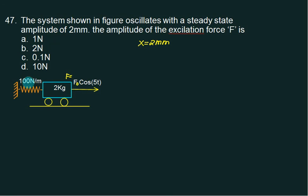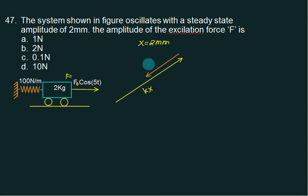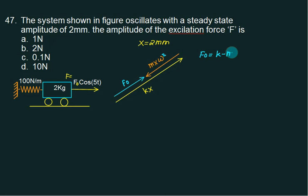Mass is given as 2 kg and K is given as 100. This is an undamped system. Because it is undamped, the vector diagram shows: the spring force is K into X, and the inertia force is M into X into omega-squared. The remaining quantity equals F0. So from this, we can write: F0 equals K minus M-omega-squared, multiplied by capital X.